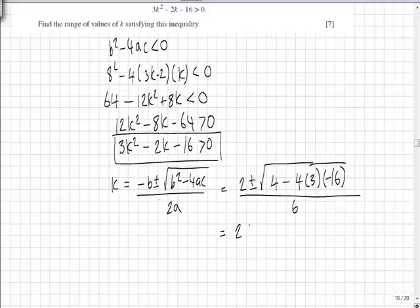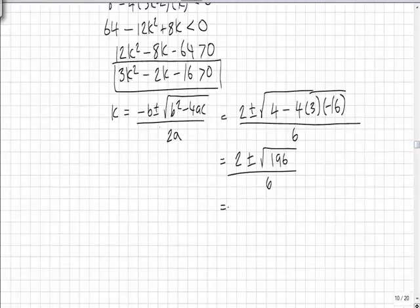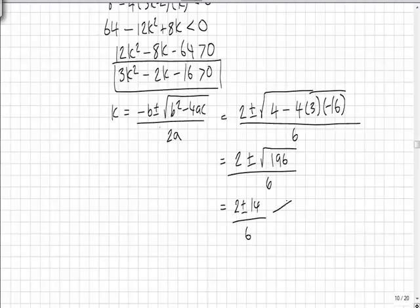Simplifying the root we get 2 plus or minus the root of 196 over 6. Luckily the root of 196 is in fact 14, so we're going to generate two values of k.